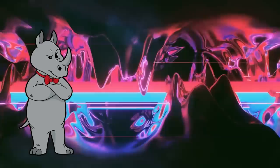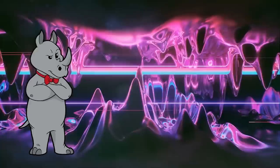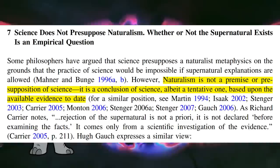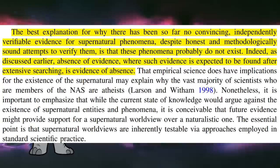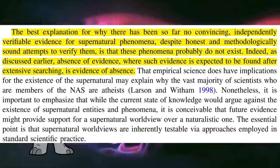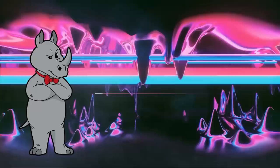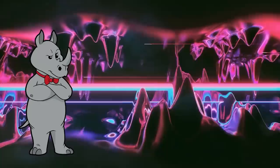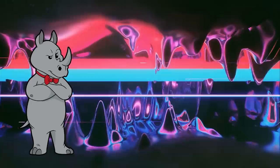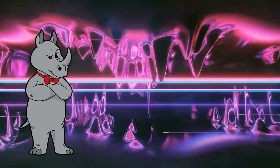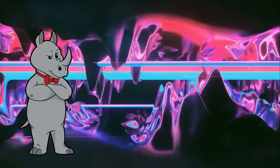To quote Yonatan Fishman of the Department of Neurology at Albert Einstein College: naturalism is not a premise or presupposition of science — it is a conclusion of science, albeit a tentative one, based upon available evidence to date. He went on to say the best explanation for why there has been no convincing, independently verifiable evidence for supernatural phenomena, despite honest and methodologically sound attempts to verify them, is that these phenomena probably do not exist. Absence of evidence, where such evidence is expected after extensive searching, is evidence of absence. This paper was largely concerned with the Kitzmiller vs. Dover decision to ban the teaching of intelligent design in the classroom.